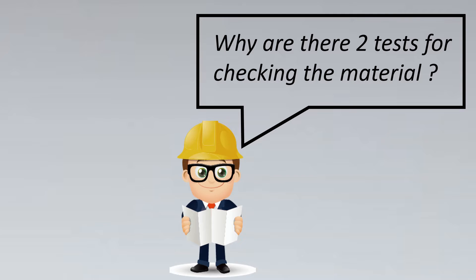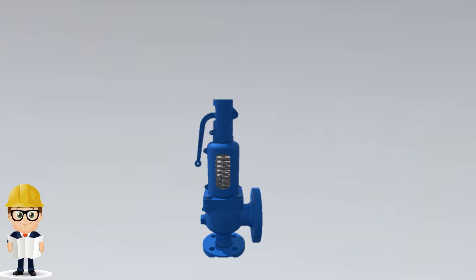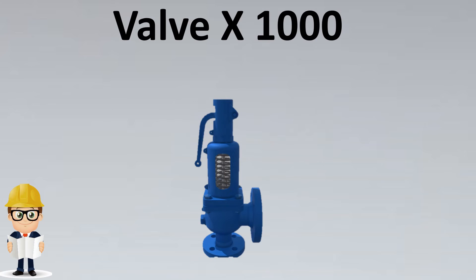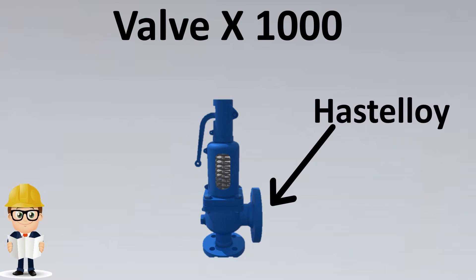In this video we will look at an actual project case study and understand these terms. We will take an example of relief valves — specifically, we had to procure around 1,000 relief valves and the material was something exotic: Hastelloy. For such a case, how would production go forward for such a valve?